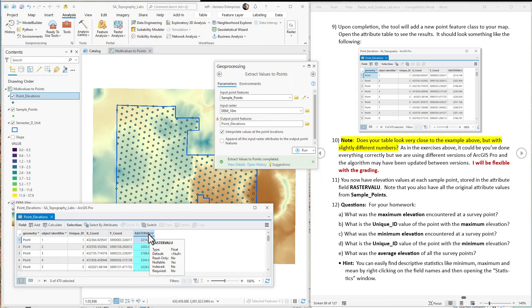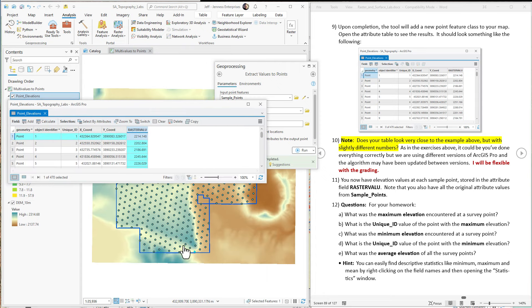This is the field that the extract values to points tool creates, and it has whatever raster that you applied here. So it's the DEM. So this is telling us that at point one, and that is down here, point one, the elevation is 2,214 meters.